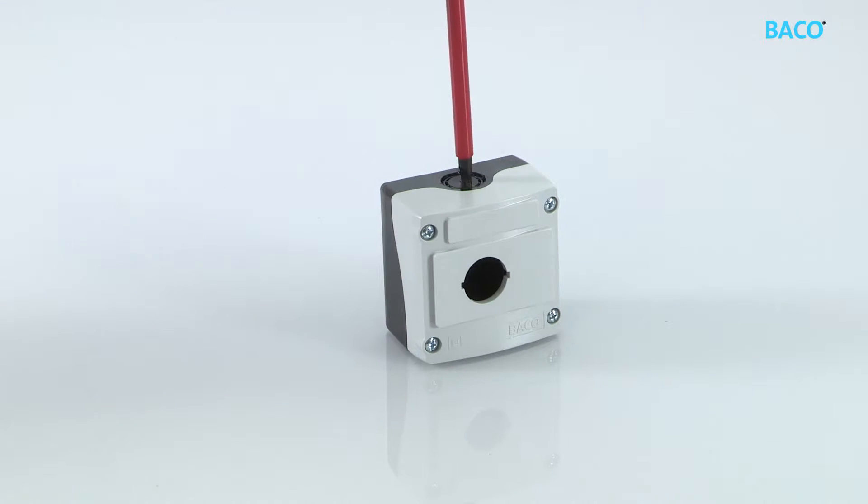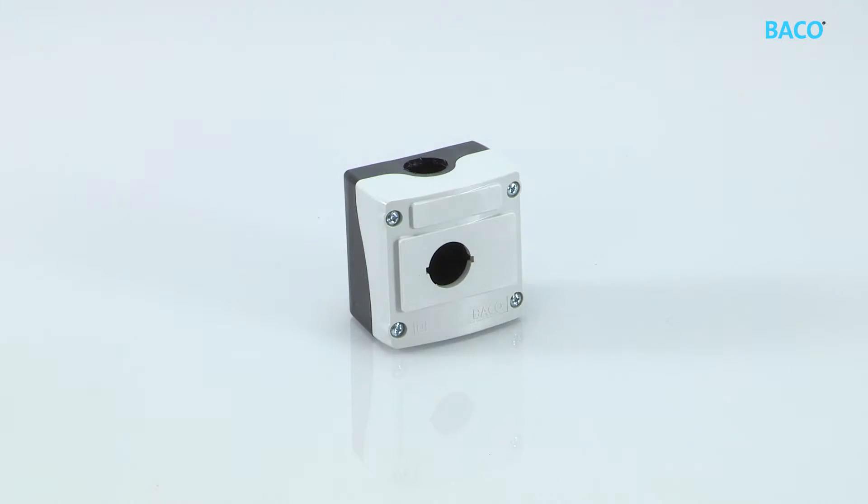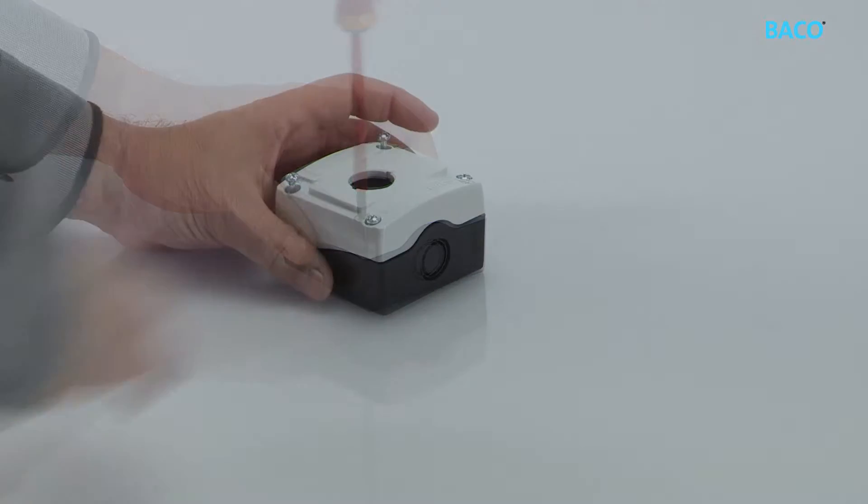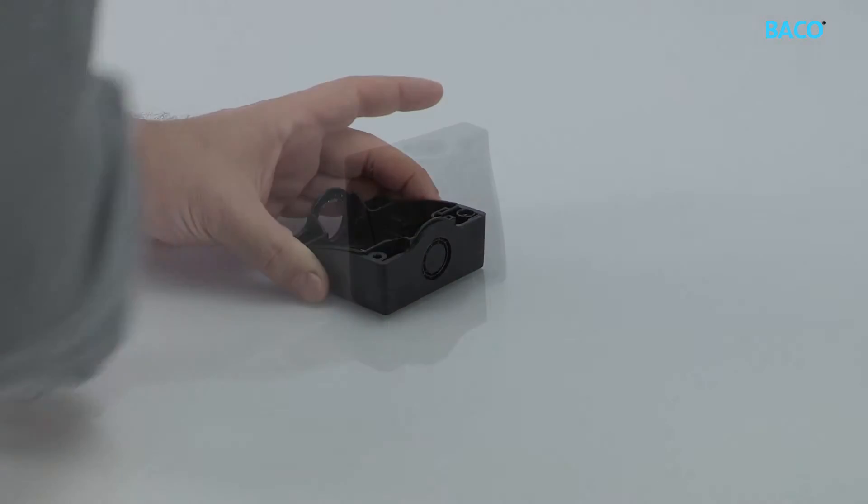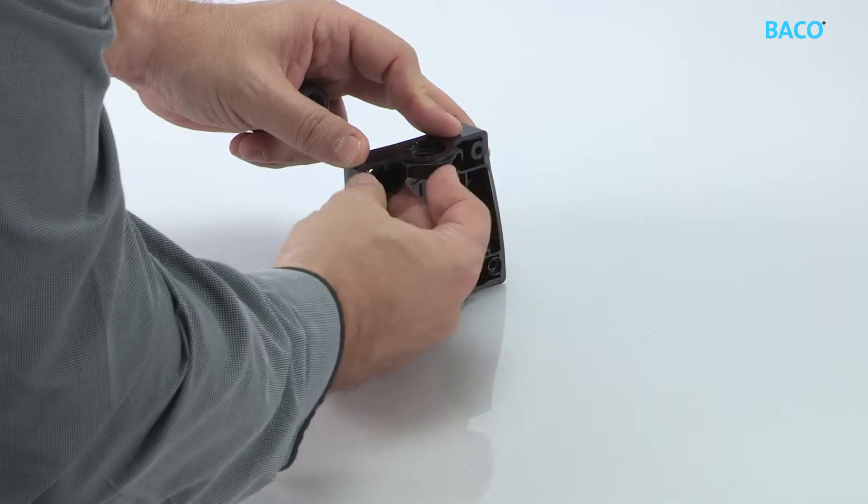The cover cap is easily removed using a punch tool and a hammer. Once the cap has been removed, the cable gland can be mounted.